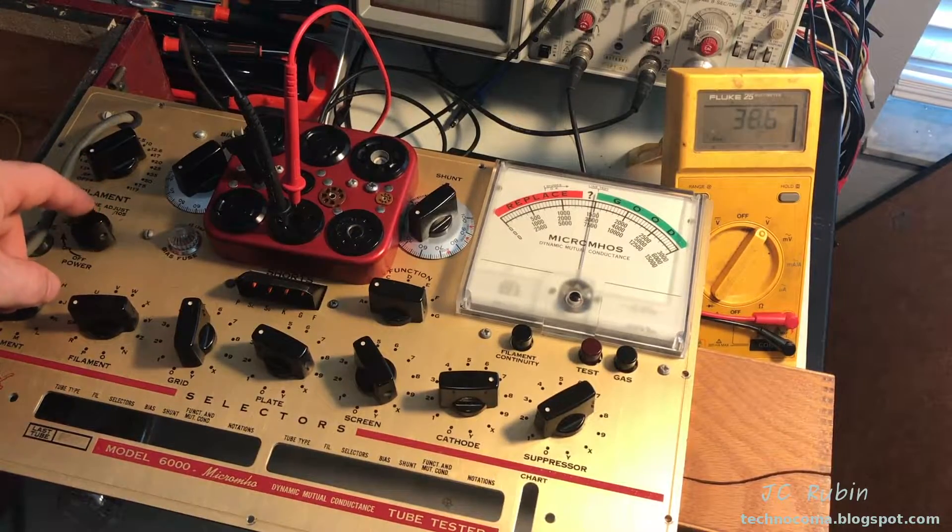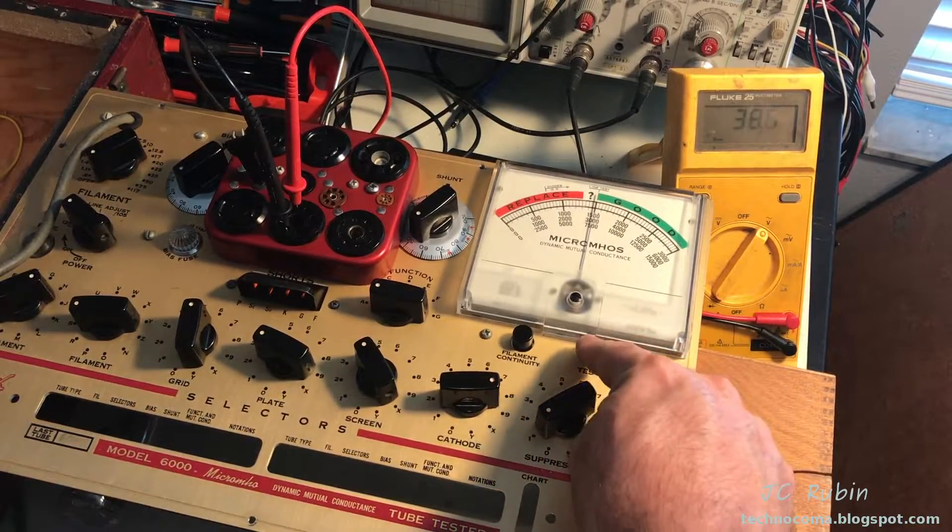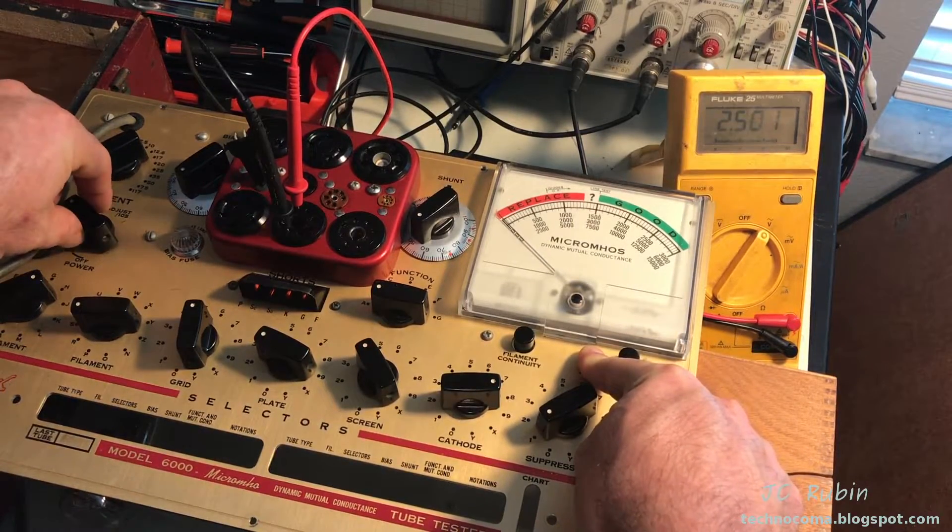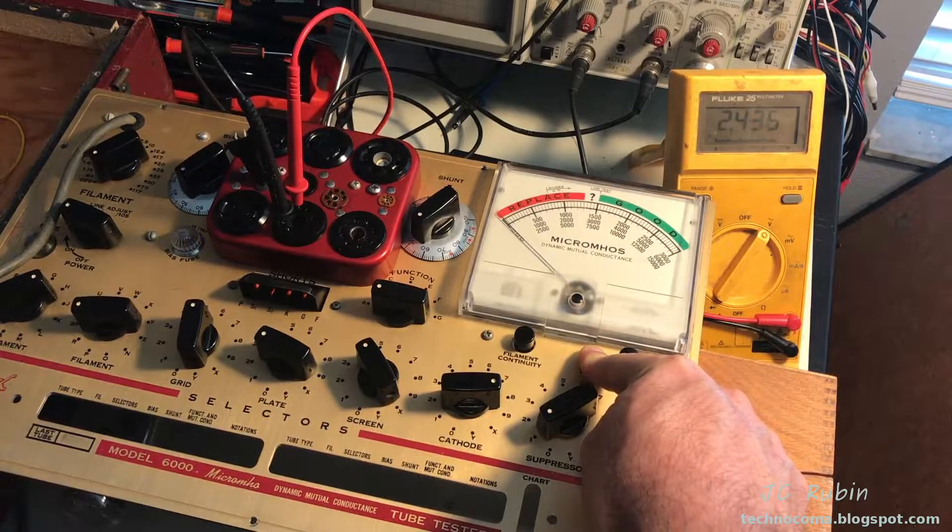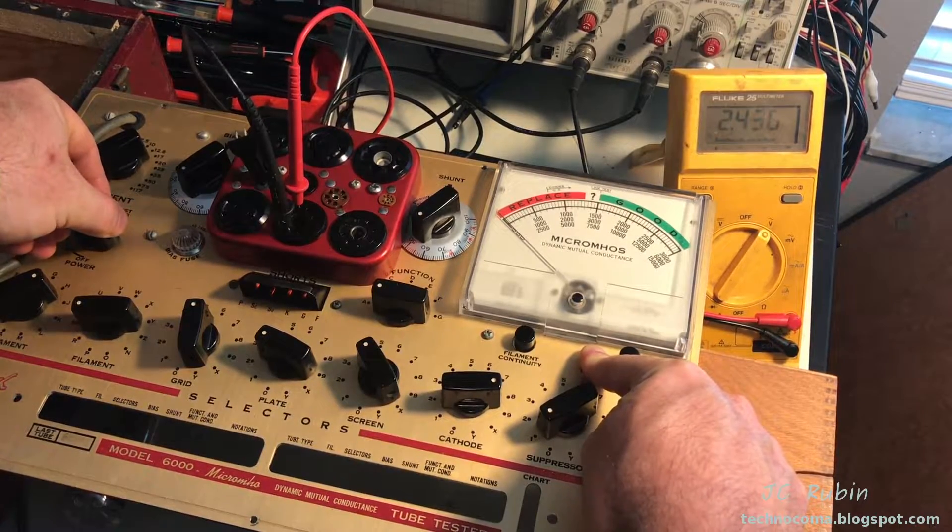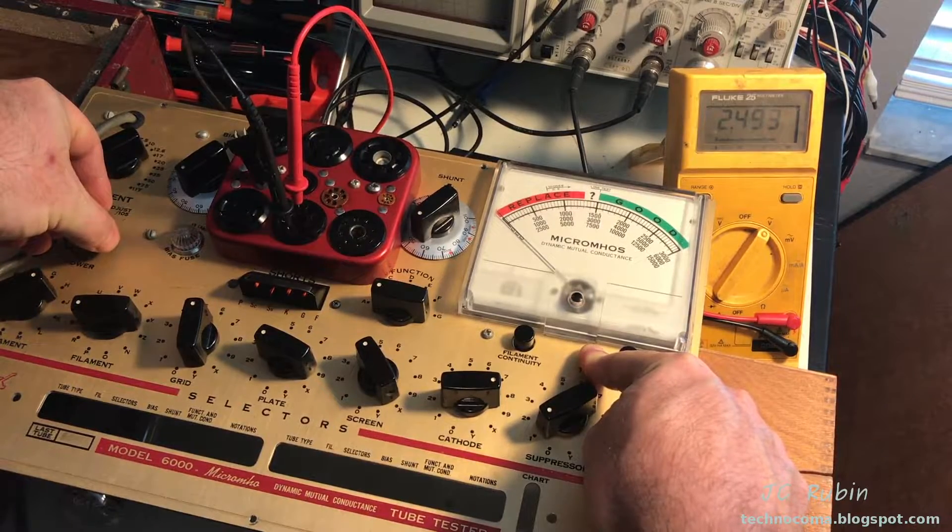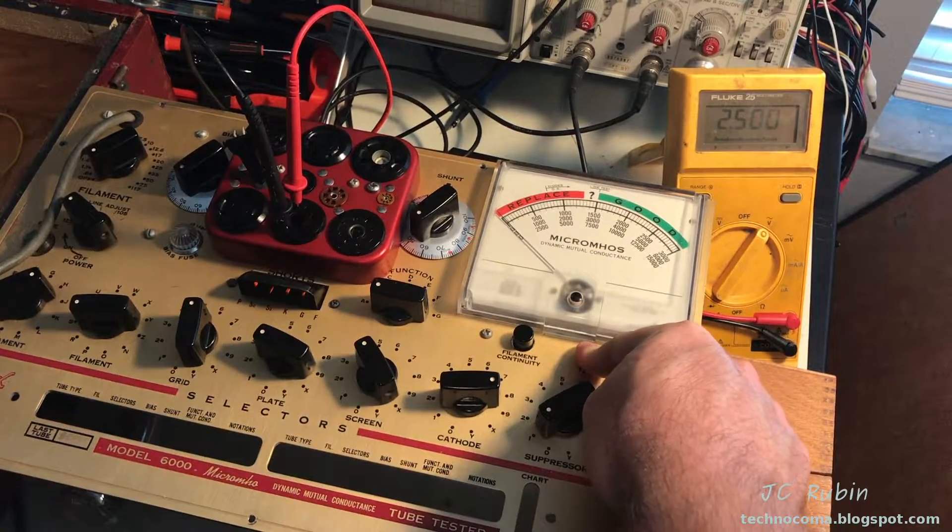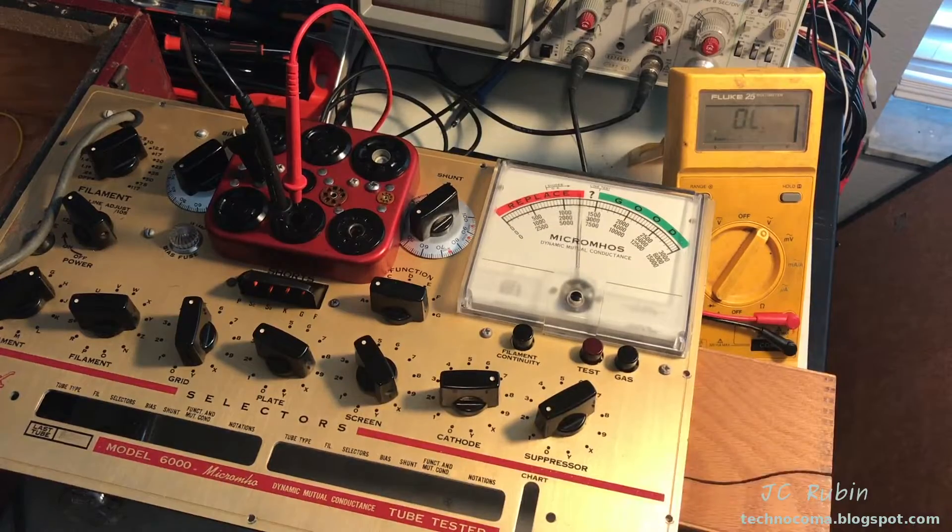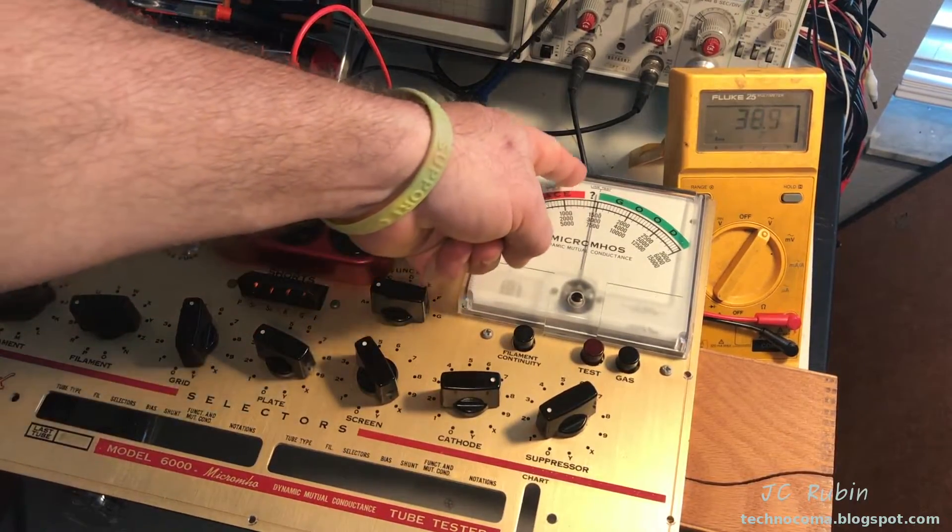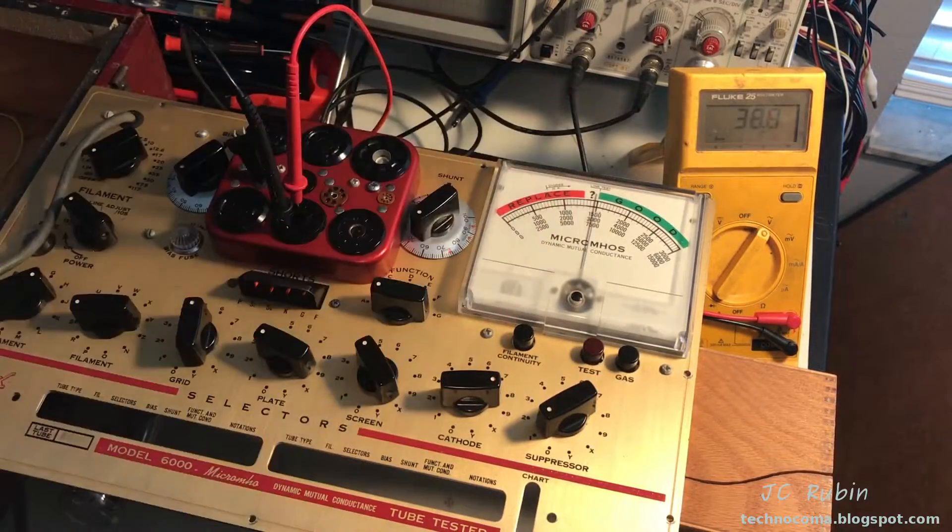That's what that pot is for. The 2.5 volts is coming from here. Watch, I'm going to hit test, see that 2.5. I'm going to turn the line and now it's 2.43. You're getting the 2.5 by adjusting the line. When I let go of test, it's that pot that makes the correlation between the 2.5 volts and putting it right there at line test.